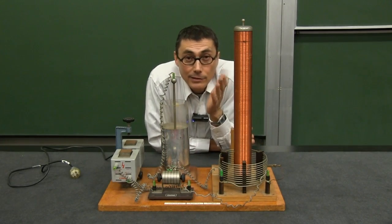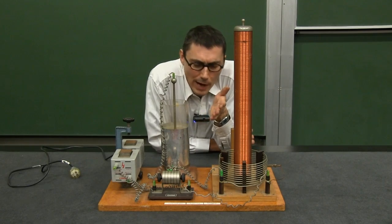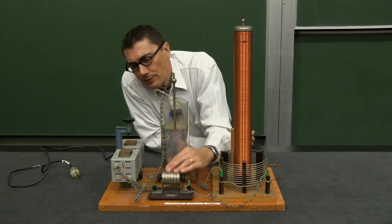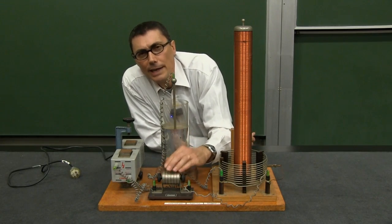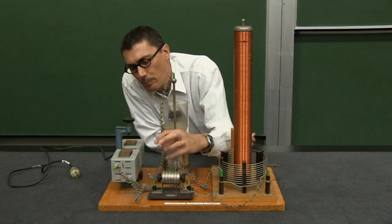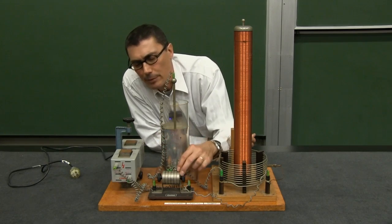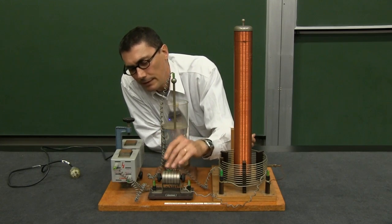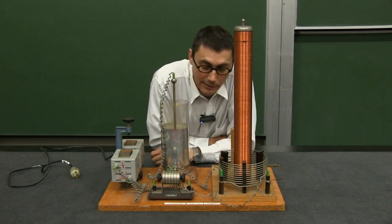On the bigger Tesla coils that you might see on the web, they have rotary spark gaps and that way you keep rotating the electrodes so that you don't get the electrodes burning up. You spread the heat around so that they last longer.